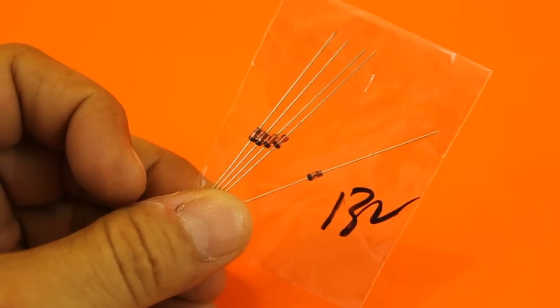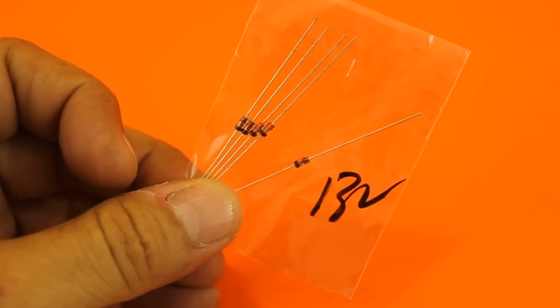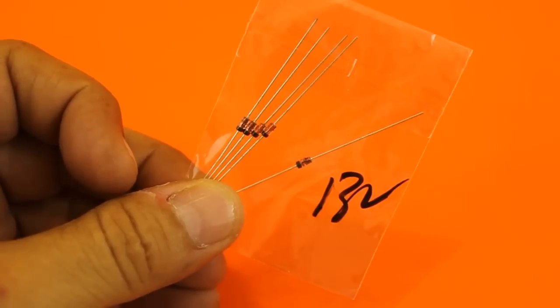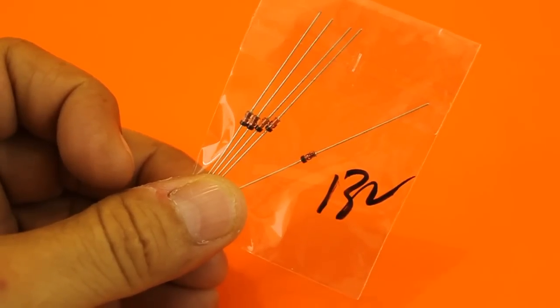Zener diodes are used as voltage regulators. You can get them at different values of voltage and power. These, for example, are 13 volts and one quarter of a watt.